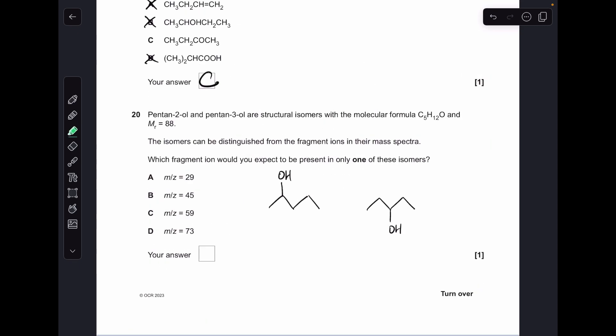And finally, number twenty. Which fragment ion would you expect in only one of these isomers? M over Z 29—well, both of them could produce that fragment because they've both got an ethyl group, so that's not it. Moving on to B, M over Z 45, well that is your 45 fragment there and you can see that the three-all can't make that fragment, so B was the answer.